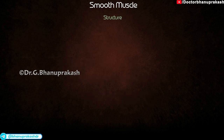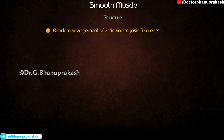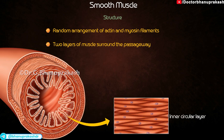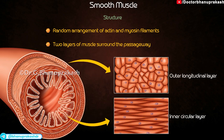Structure. There is a random arrangement of actin and myosin filaments. Two layers of muscle surround the passageway: an inner circular layer and an outer longitudinal layer.